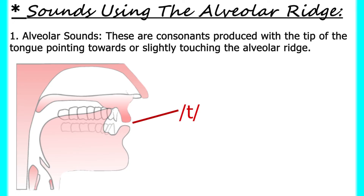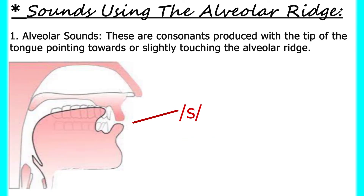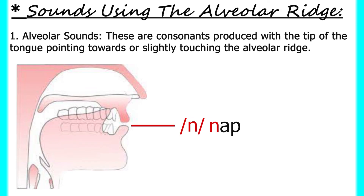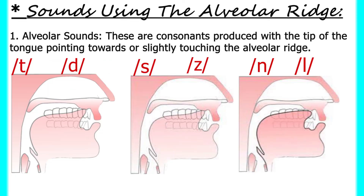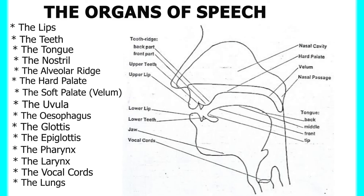Examples of alveolar sounds include: 't' in ten, 'd' in den, 's' in sip, 'z' in zip, 'n' in nap, and 'l' in lap. In the production of these sounds, the tip of the tongue is pointing towards or slightly touching the alveolar ridge, which is why they are called alveolar sounds.